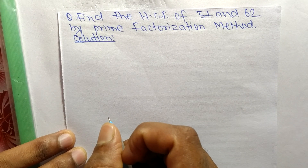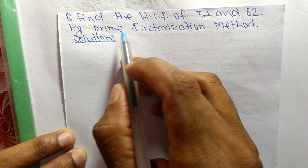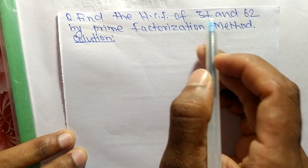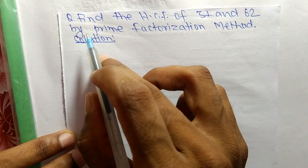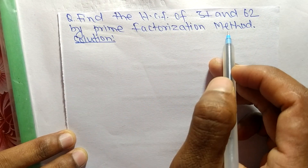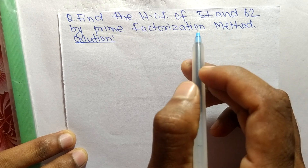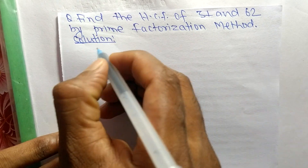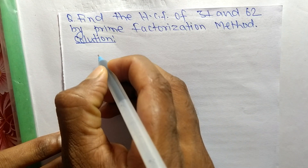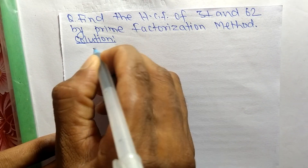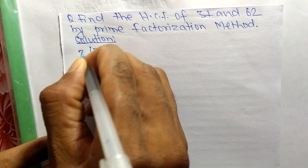Today in this video we shall learn to find the HCF of 31 and 62 by prime factorization method. First we find out the prime factors of 31 and 62.